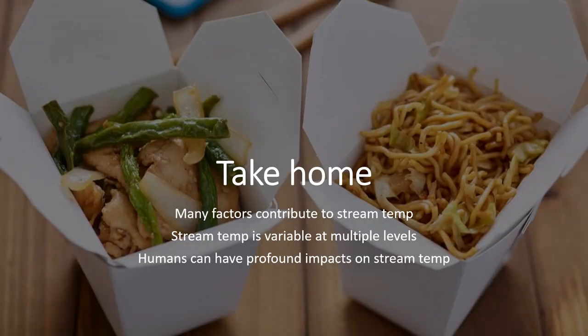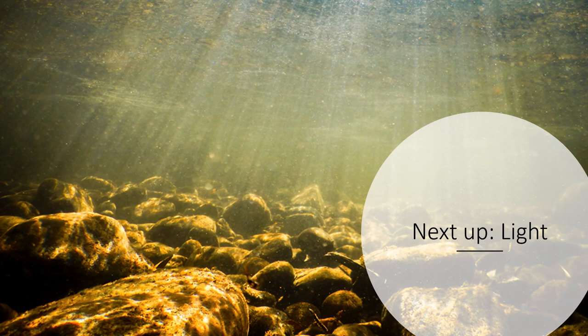For take-homes: there are a number of factors which can affect stream temperature. Stream temperature can be variable at many scales, both small and large. Within a stream, temperature is often well-mixed and tends to be relatively stable, especially in natural streams over the course of a day, though rain and other factors can change that. Because these systems are sensitive to so many factors that we interact with, humans can have profound impacts on streams — simply by removing trees in and around a stream, humans can enormously impact how streams heat and cool. Next up, now that we've covered ways temperature is variable in streams, we'll talk about light.